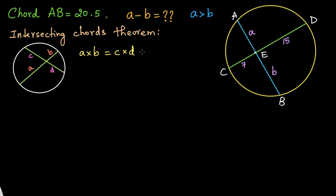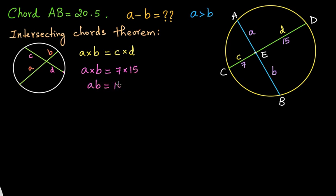This theorem can be proved using the concept of similar triangles, but for this problem we will make use of it directly. In the circle we have two intersecting chords, so we can say that this is C and this is D. Applying the theorem: A times B equals C times D, which is 7 times 15, so we get the product AB equal to 105.